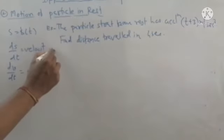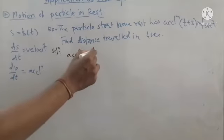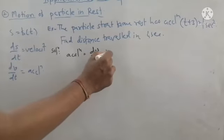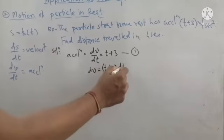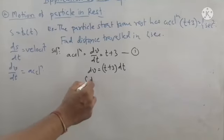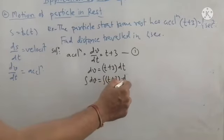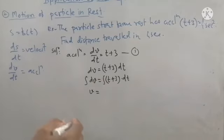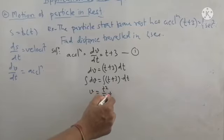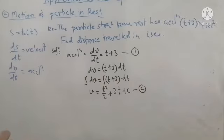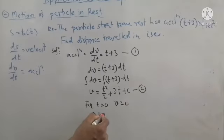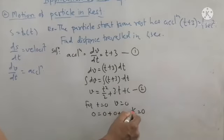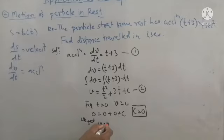A particle starts from rest with acceleration a = t + 3. Since acceleration is dv/dt, we have dv/dt = t + 3, which is a differential equation. Solving by variable separable: move dt to the right-hand side and integrate both sides. Integration of dv is v; t integrates to t squared by 2 and 3 dt integrates to 3t, plus constant C. Since the particle starts from rest, at t = 0, v = 0, giving C = 0.